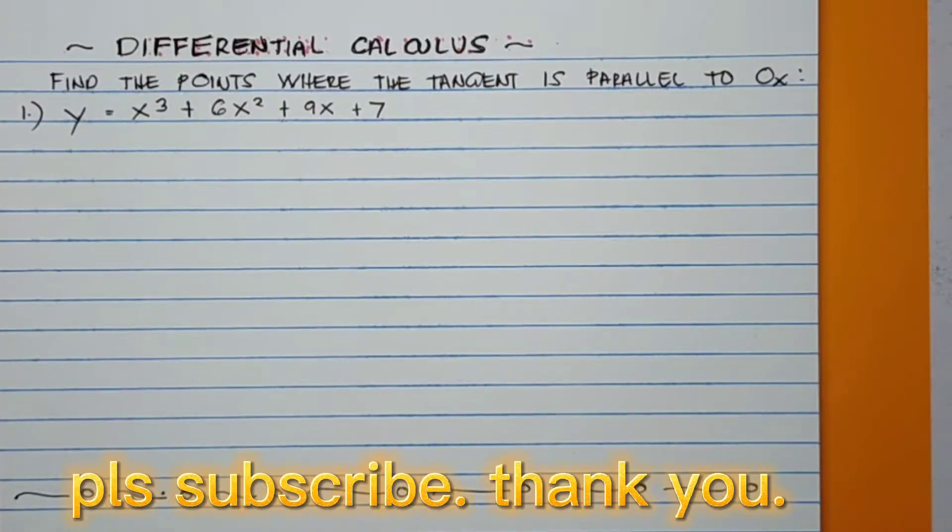Hello, we have here another topic for differential calculus. Find the points where the tangent is parallel to 0x. Number 1: y = x³ + 6x² + 9x + 7.